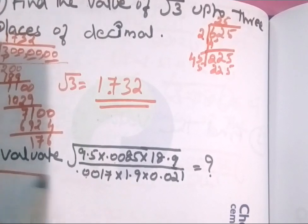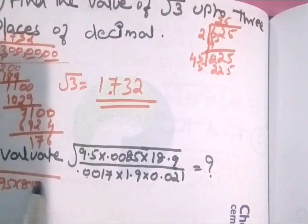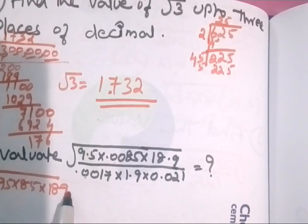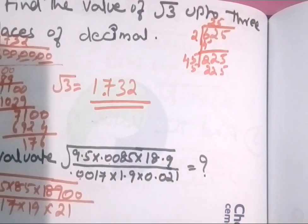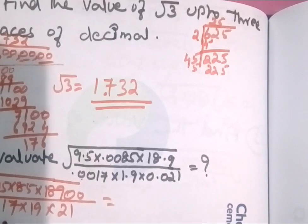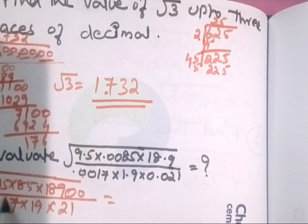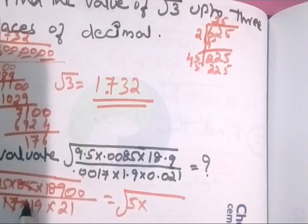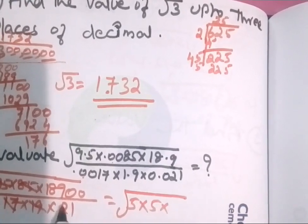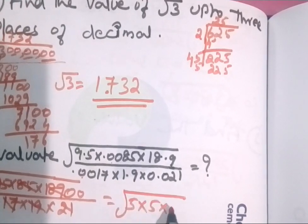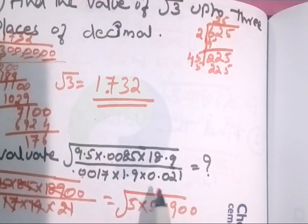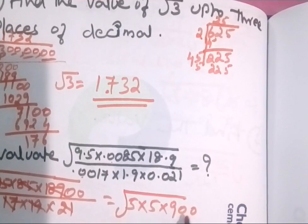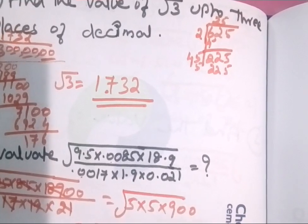This is the same as root of 95 into 85 into 189, divided by 17 into 19 into 21. We simplify by removing decimals. That's the simple approach — simplify the factors under the root.